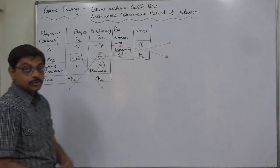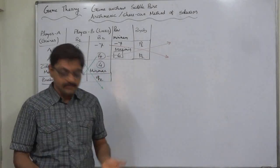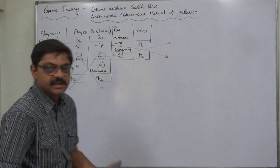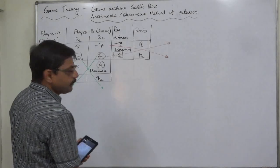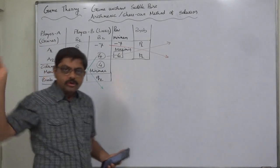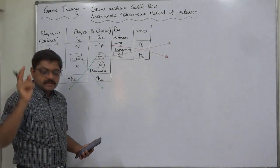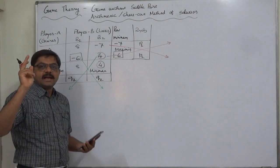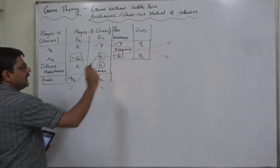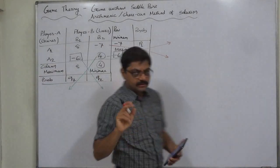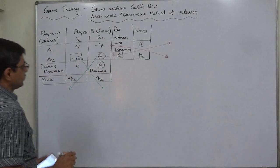We are going to use the arithmetic method, or shortcut method — a very sweet term, and we all like that term. This is really a shortcut method because the same probabilities we calculated in the previous two lectures through the algebraic method as well as the formula method will be obtained here by a very easy method.